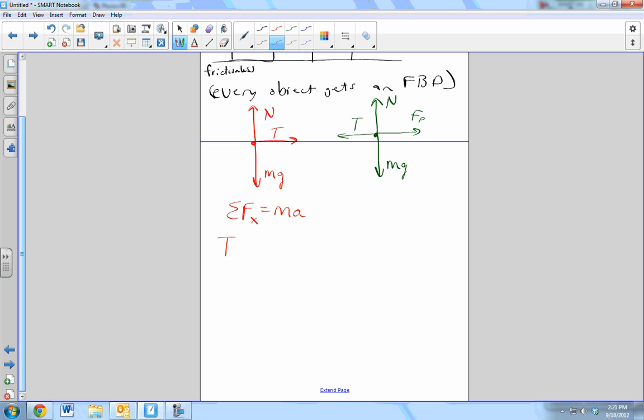Tension. Anything else? Nothing else. So that force must be equal to ma. Tension equals the mass of the object, 15 kilograms, and the acceleration. We're stuck. We have two variables and only one equation. So, what do we do?